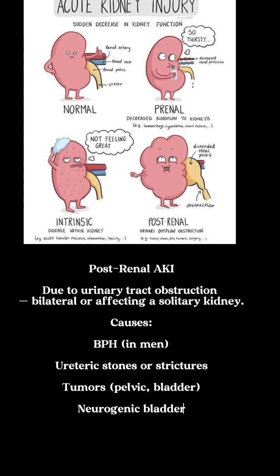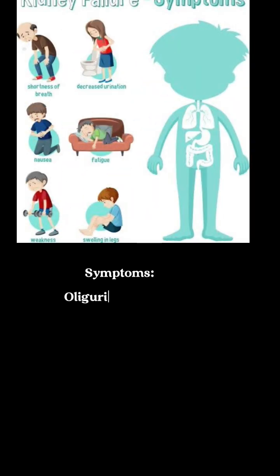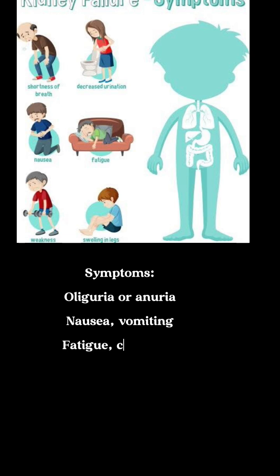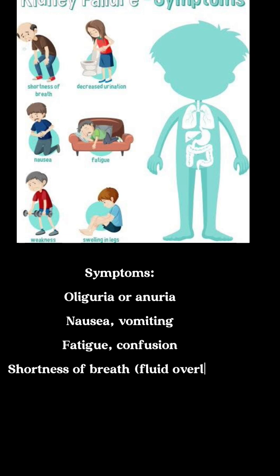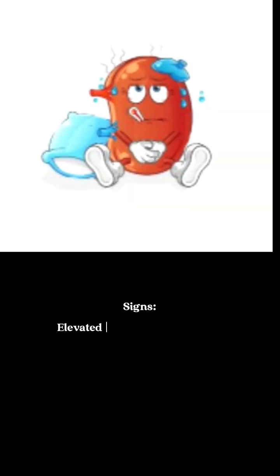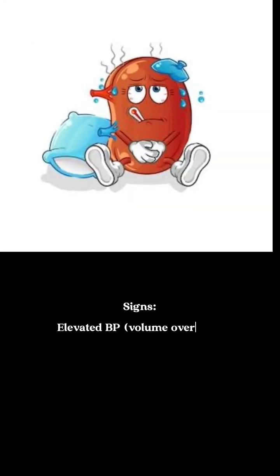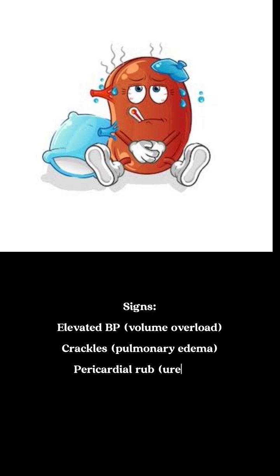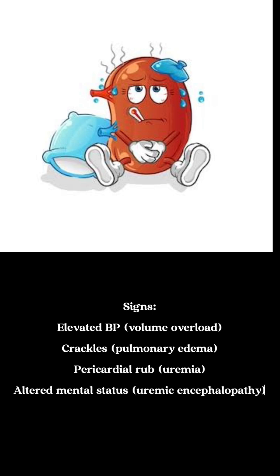Symptoms and signs include oliguria or anuria, nausea, vomiting, fatigue, confusion, and shortness of breath. Signs include elevated blood pressure, crackles due to pulmonary edema, pericardial rub due to uremia, and altered mental status from uremic encephalopathy.